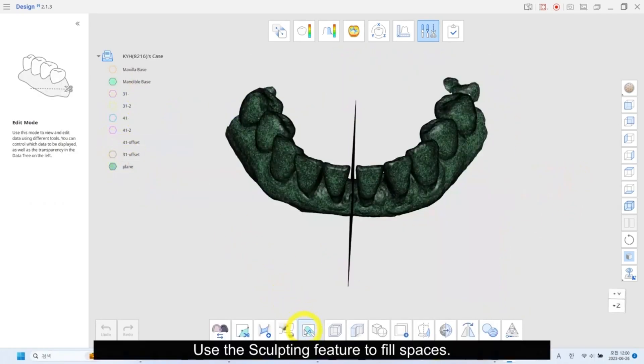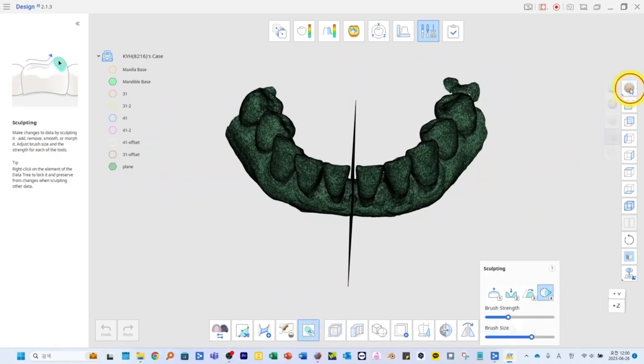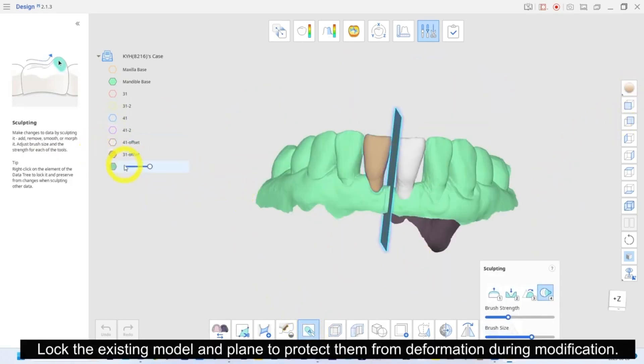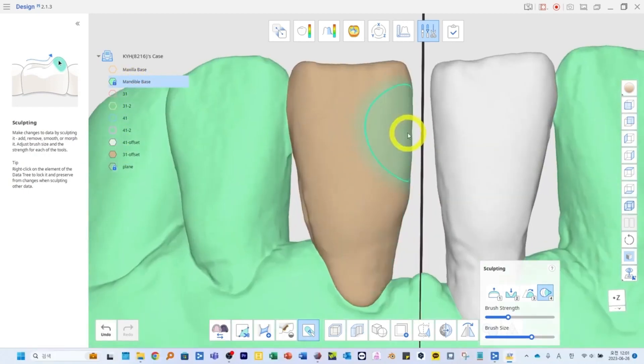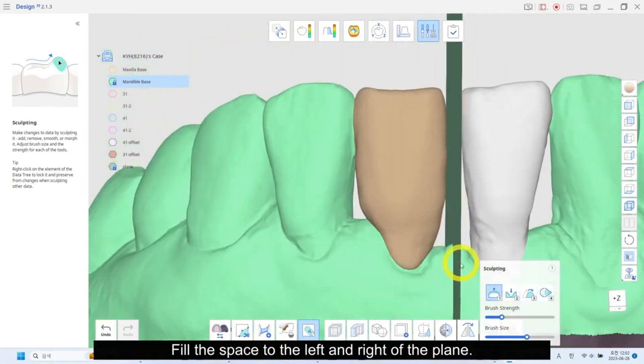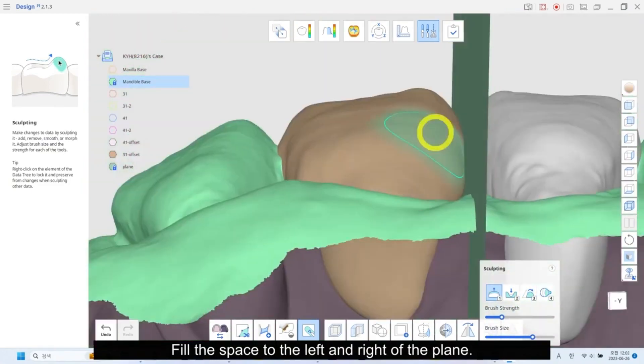Use the sculpting feature to fill spaces. Lock the existing model and plane to protect them from deformation during modification. Fill the space to the left and right of the plane.